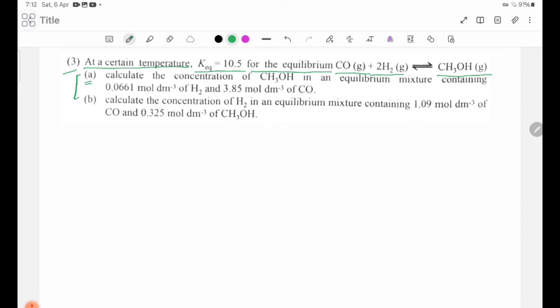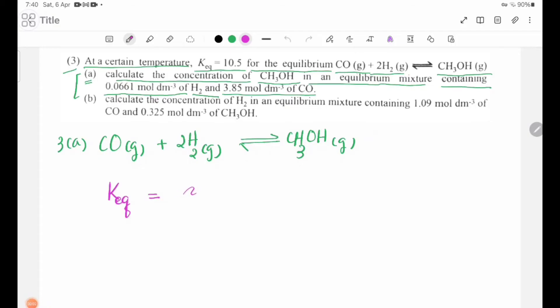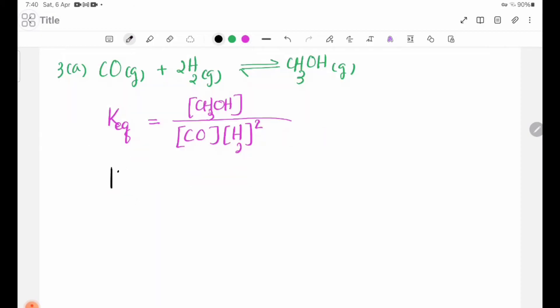Part A: Calculate the concentration of CH3OH in an equilibrium mixture containing 0.0661 molar per dm cubed of H2 and 3.85 molar per dm cubed of CO. The Keq expression is CH3OH concentration divided by CO concentration times H2 concentration squared. Keq equals 10.5.